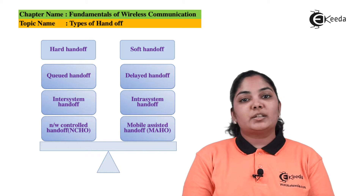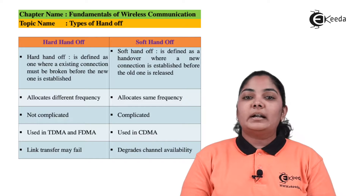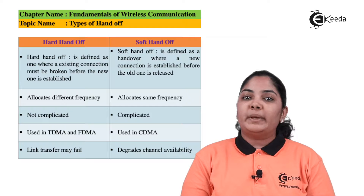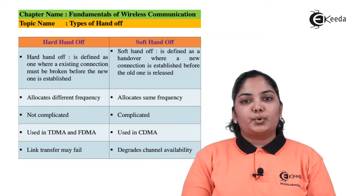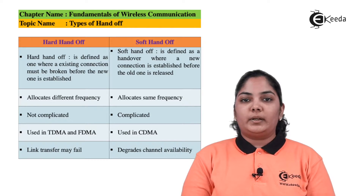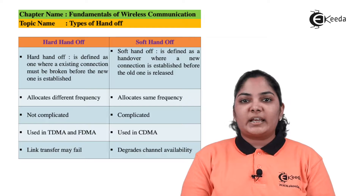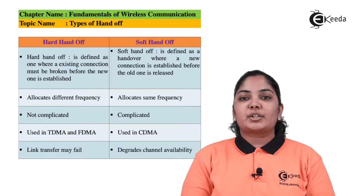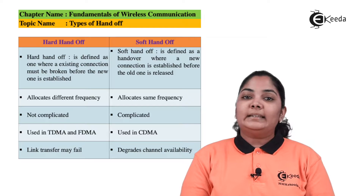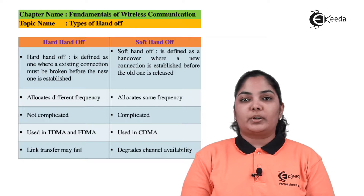In hard handoff, the existing connection with the base station is first broken down and then a new connection is made with the new base station. Whereas in soft handoff, the existing connection is still maintained while the new connection is made with the new base station, and then the existing connection is broken down.